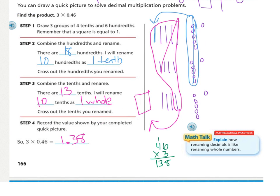Before we move on to the share and show, the math talk says explain how renaming decimals is like renaming whole numbers. We're regrouping the exact same way, groups of ten. And also, if you multiply just whole numbers, the digits are the same. The decimal place is just in a different spot.